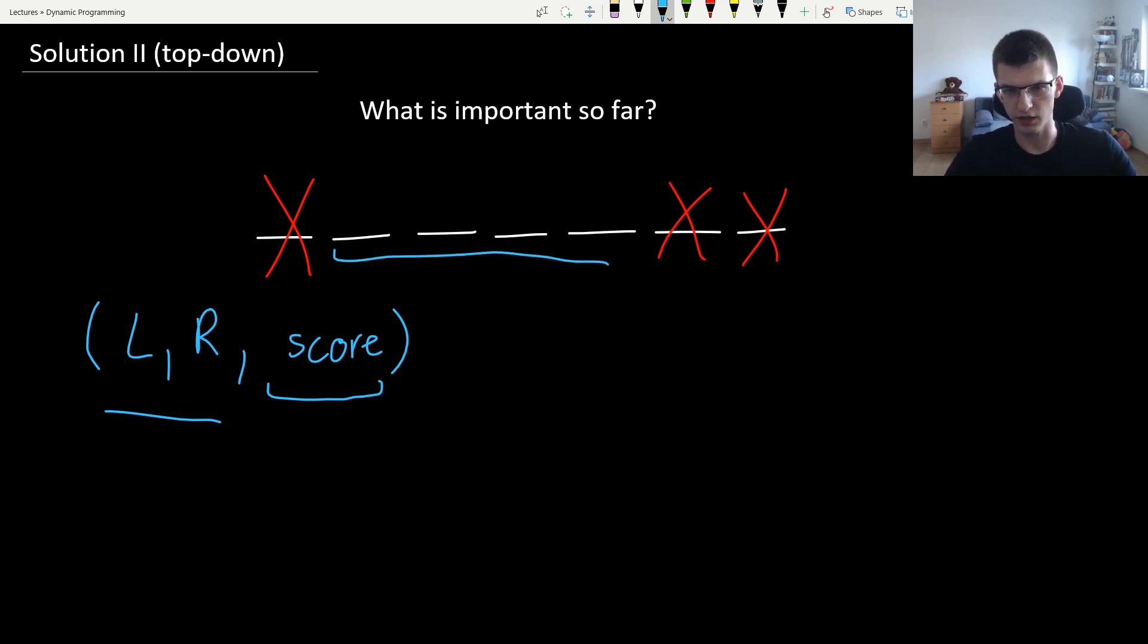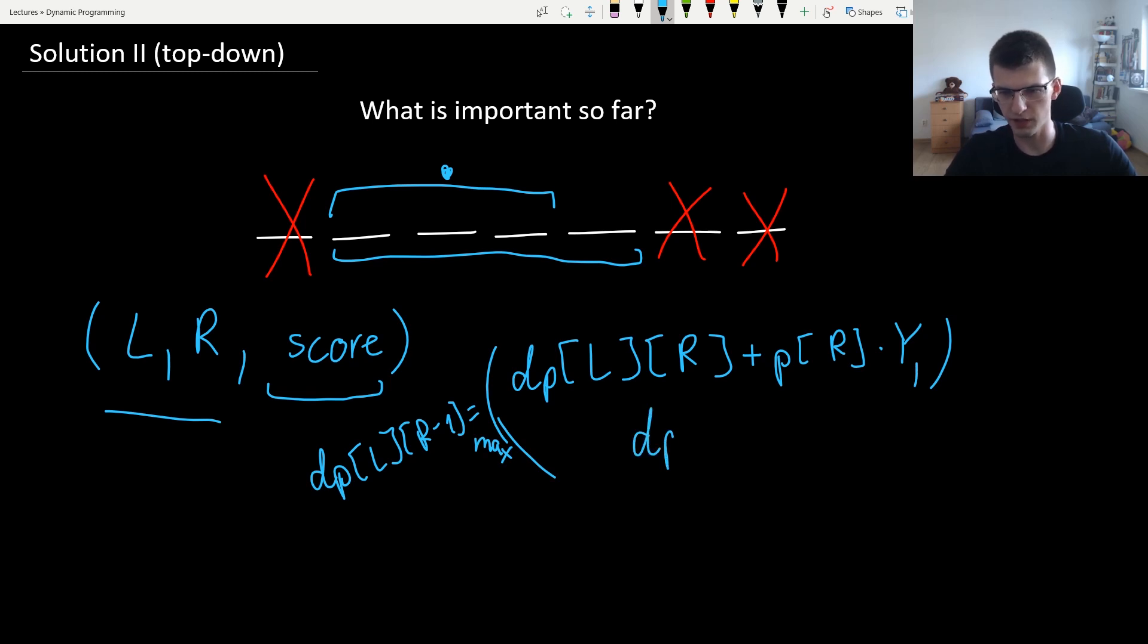Then if we are here at DP[L,R], from that state we know that we can go to state L+1, R-1. And the score will be DP[L,R] already, plus P[R] times Y, this is the possible value that we should put here. For interval L, R-1, we will say that DP[L,R-1] equals max of DP[L,R-1] already computed. This is an example of push DP, where we use the current value to compute the next one, to update the next one.